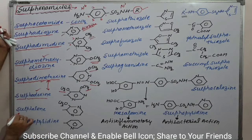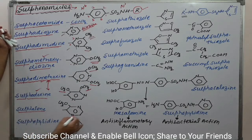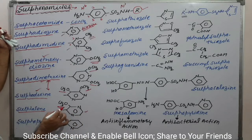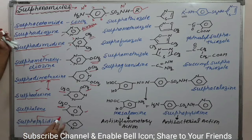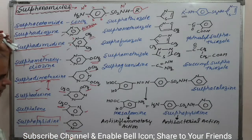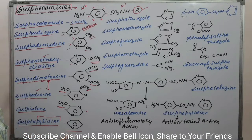Next is sulphalene, which is again a sulphadiazine but with one methoxy group. Next is sulphapyridine. Pyridine is a 6-membered ring containing 1 nitrogen — that is the pyridine ring. So sulphapyridine is straightforward.